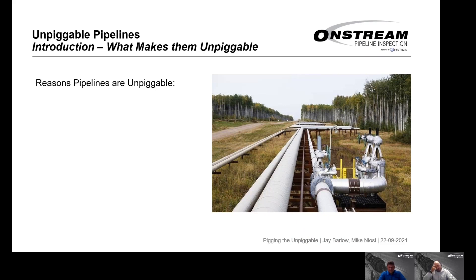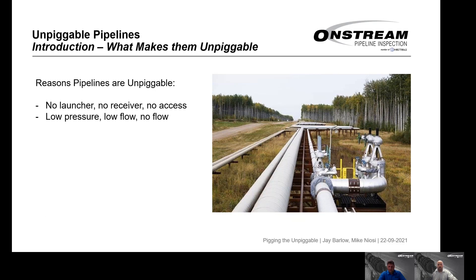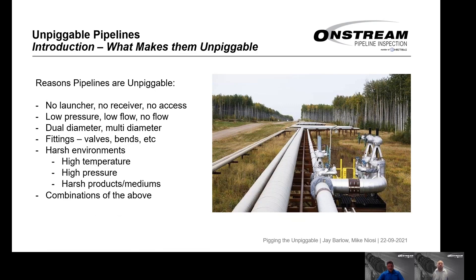Pipelines are classified as unpiggable — which in reality just means difficult to pig — for several reasons: no launcher, no receiver, no access; low pressure, low flow, or no flow; dual or multi-diameter pipelines; strange fittings, valves, bends, or heavy wall thicknesses; partial environments such as high temperature, high pressure, or unusual chemicals or pipeline media. Any combination of these factors makes pipelines hard to inspect.